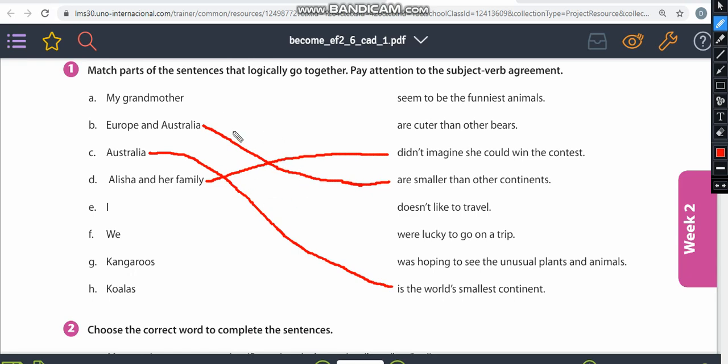So now we know that Alicia and her family didn't imagine she could win the contest. So my grandmother, now we know the answer. My grandmother doesn't like to travel, right? That's what I always say. You have to wait a little when we have two options to form one sentence. Because the answer to one of these options is going to appear in the rest of the exercise.